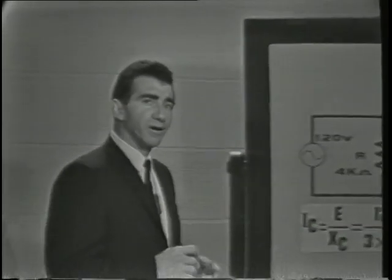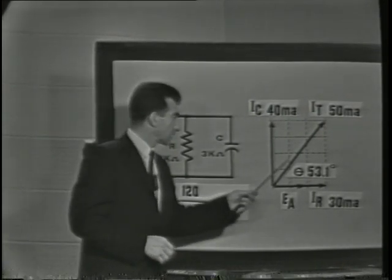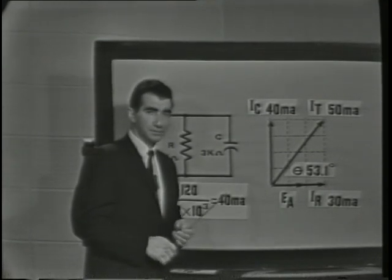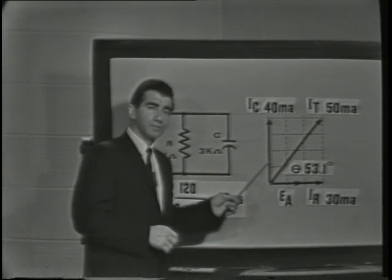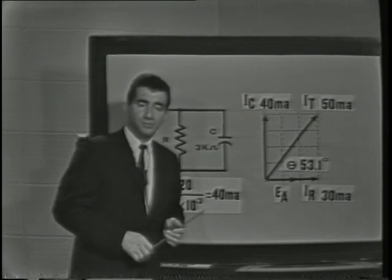The graphical solution of the problem is not very accurate and would become difficult to handle in a more complex circuit. The next portion of this lesson will point out a much more accurate and easier way to calculate the unknown factors in our circuit. First, we'll find the current in each branch as we did before, draw the vectors that represent these currents, and show their values and phase relationships. But before we go on, let's first relate the vector representation to the familiar right triangle.